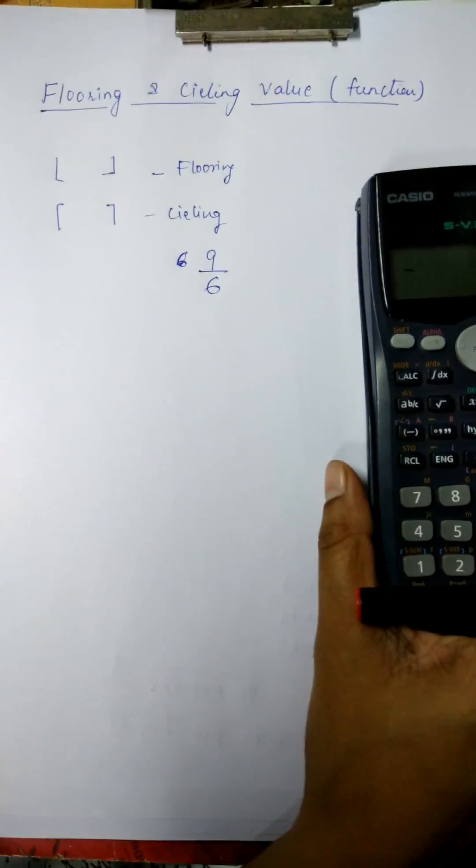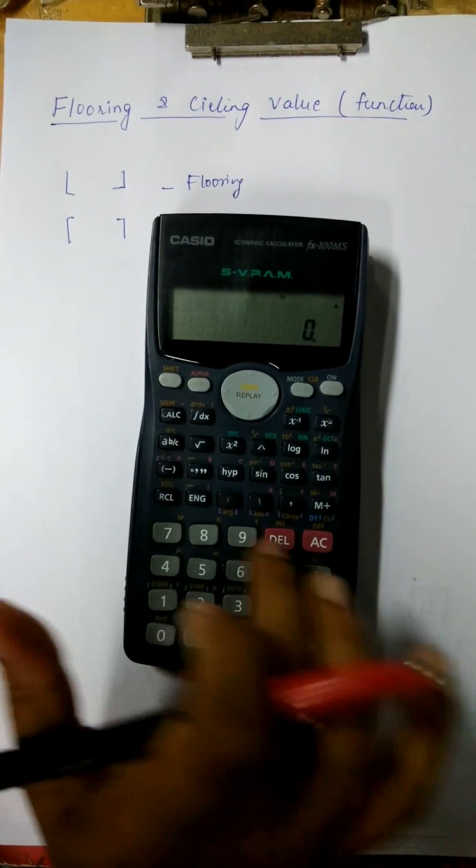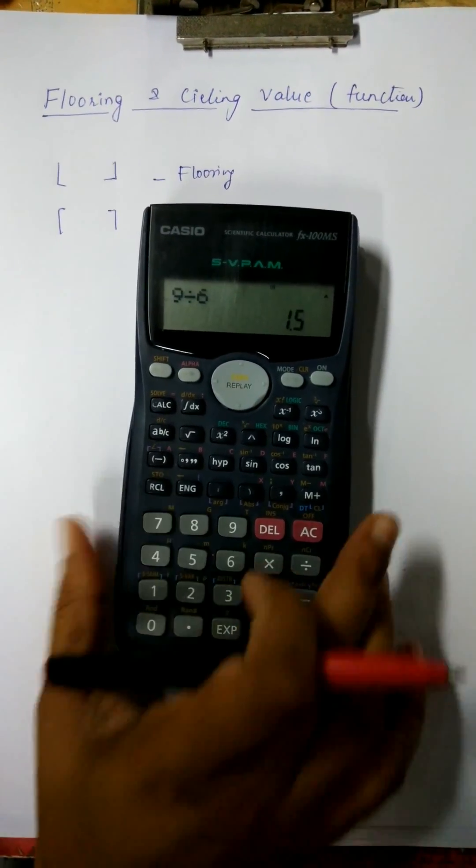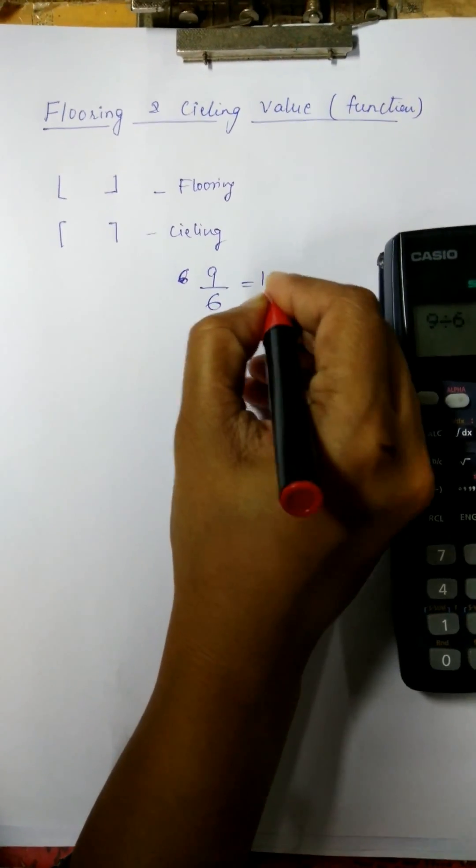How do we remove flooring and ceiling values? First, what do we do? 9 divided by 6. That is 1.5.